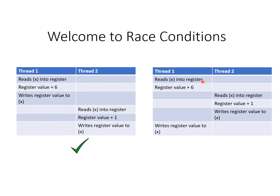In this other scenario, thread one reads the value and adds six when it's stored in its register. However, at that stage it gets context switched. Thread two begins, reads the original value of x into its register, adds one to it, writes it back, and finishes. But then thread one resumes and writes back the value that it originally read from memory. So here we have a race condition — the value is not what we expect. It's going to be x plus six, and the update from thread two is going to be lost.